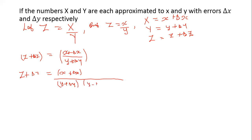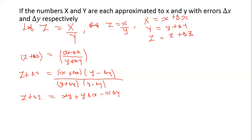We rationalize the denominator by multiplying by y minus delta y on top and bottom. Doing the multiplication on the right-hand side, we get xy plus y·delta x minus x·delta y plus delta x·delta y in the numerator, divided by y squared minus delta y squared, since it is a difference of two squares.